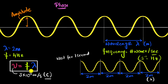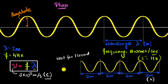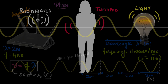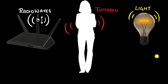Since c is a constant, if you have a high-frequency electromagnetic wave it must have a shorter wavelength, and if it has a long wavelength it must have a lower frequency. So for electromagnetic waves in vacuum, frequency and wavelength are inversely related to each other. And now we can go back to our original question.